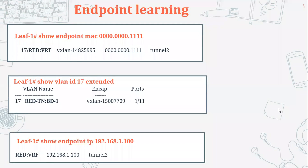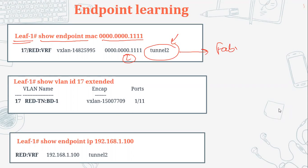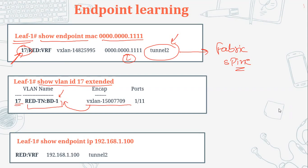From 'show endpoint mac' output, if instead of the letter 'L' we see a tunnel interface, it means that particular endpoint is learned via the fabric or spine — meaning it is a remote endpoint. We can also see locally significant PI VLANs. Running 'show vlan id extended' shows that this VLAN belongs to a bridge domain and shows the VxLAN ID assigned to that bridge domain. Whenever you create a bridge domain, a VxLAN ID is automatically assigned that is unique throughout your fabric.